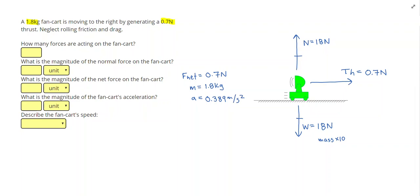Alright, filling out the answers on the left side, I have three forces acting on the fan cart. The normal force was 18 N. The net force was 0.7 N. The acceleration was 0.389 meters per second squared. Make sure you put in three sig figs there. And the fan cart speed, well the fan cart is moving to the right, the larger force is to the right, so the speed would be increasing.